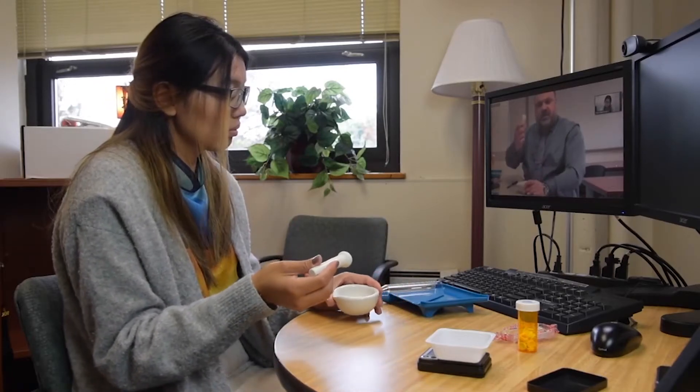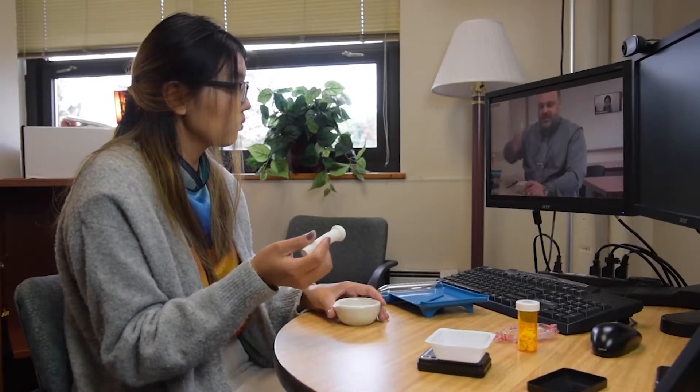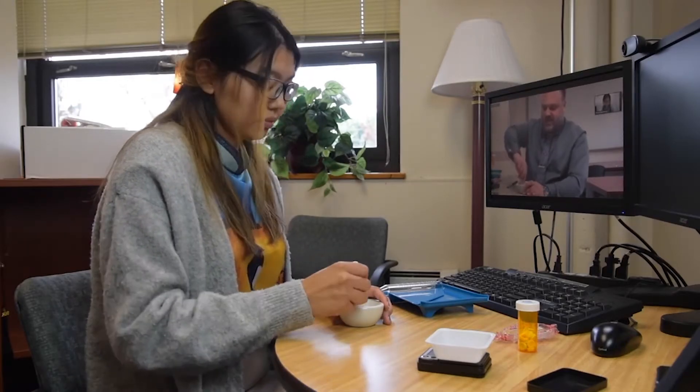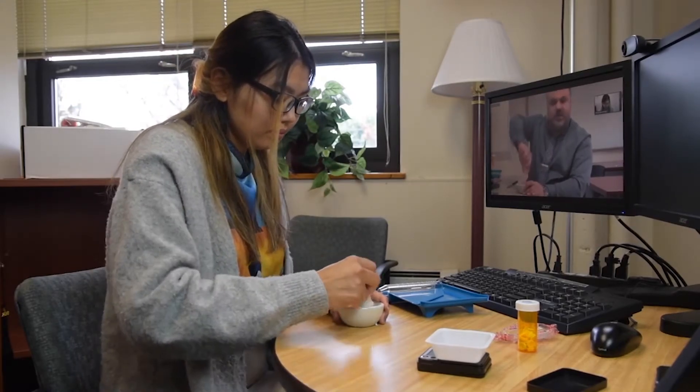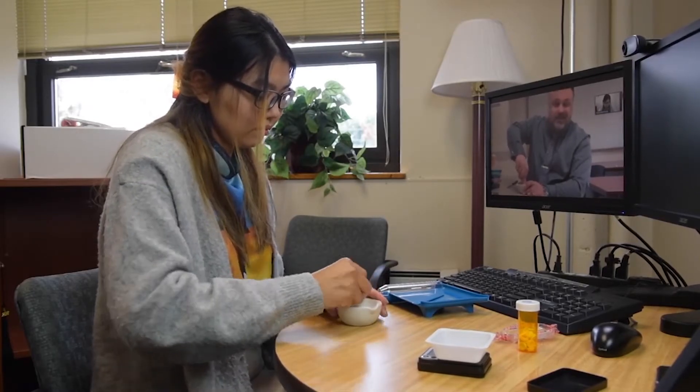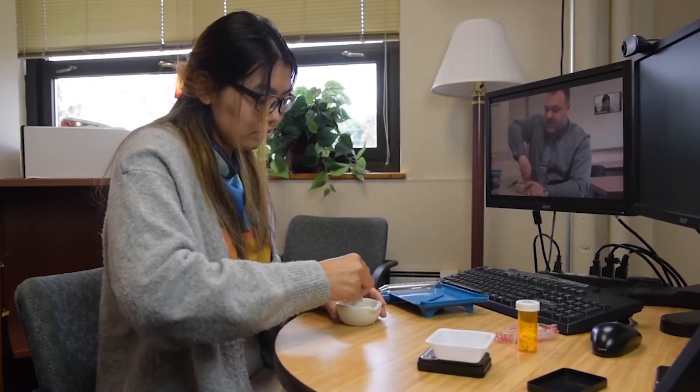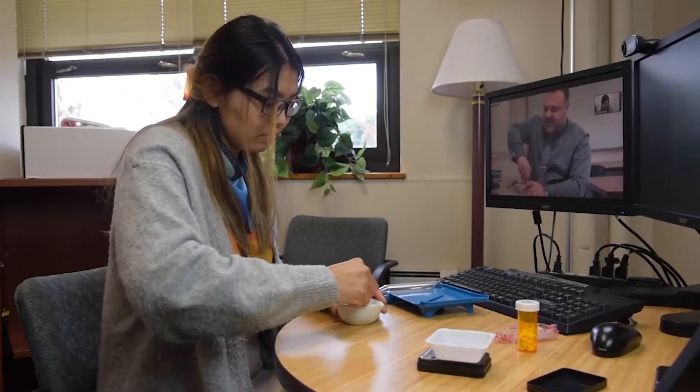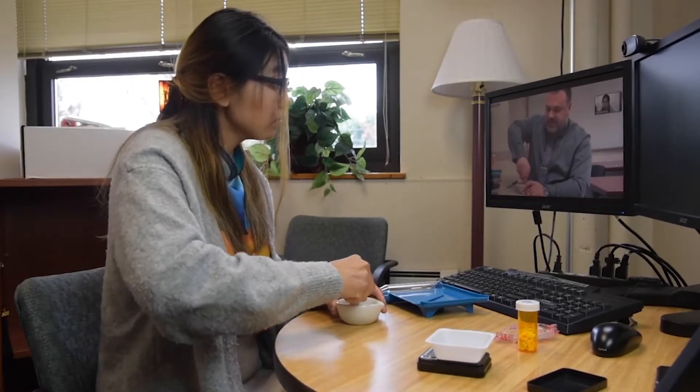Placing the mortar on a solid flat surface, you're going to get the pestle in your dominant hand and you're going to crush each of the Smarties. We use a twisting motion to make it a little easier. You don't want to pound on them or the material will fly out of your mortar.